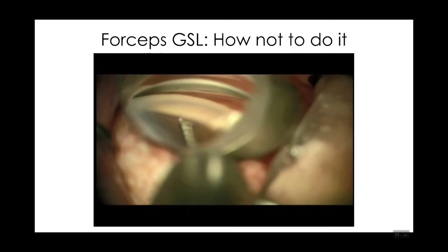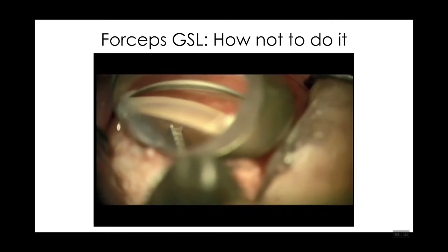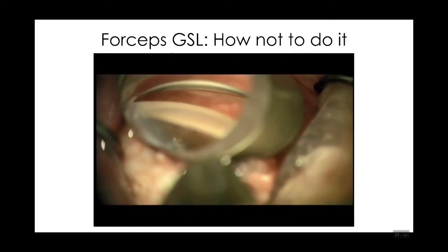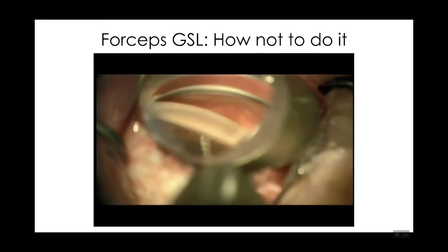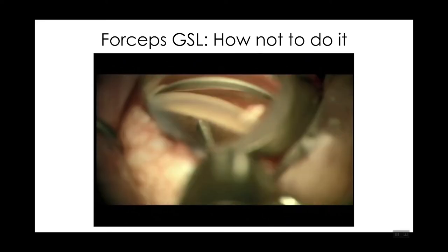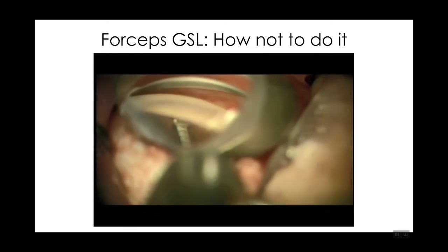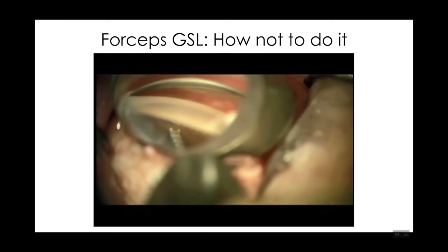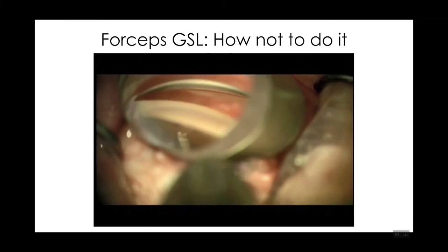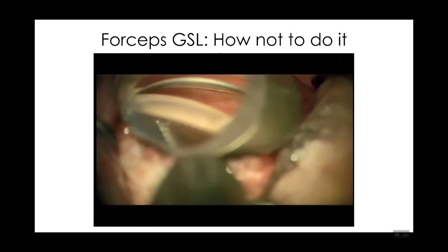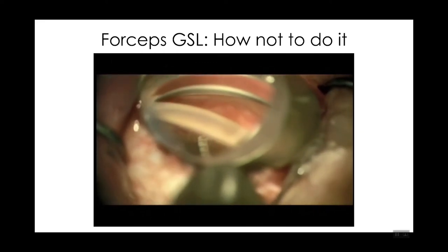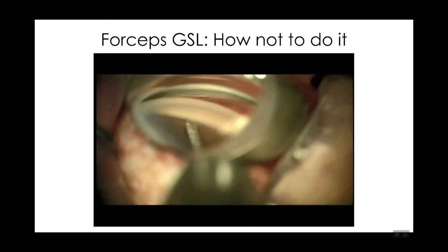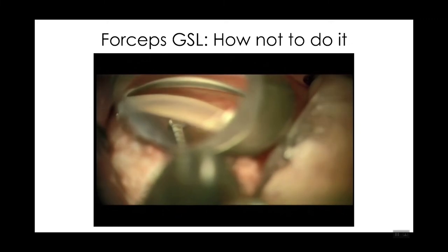Here's an example of how not to do GSL with forceps. What we're seeing is an incomplete grab of the periphery of the iris and releasing the iris prior to separation of the PAS. This shows the importance of committing to the tissue once you grab it and pulling down away from the trabecular meshwork.